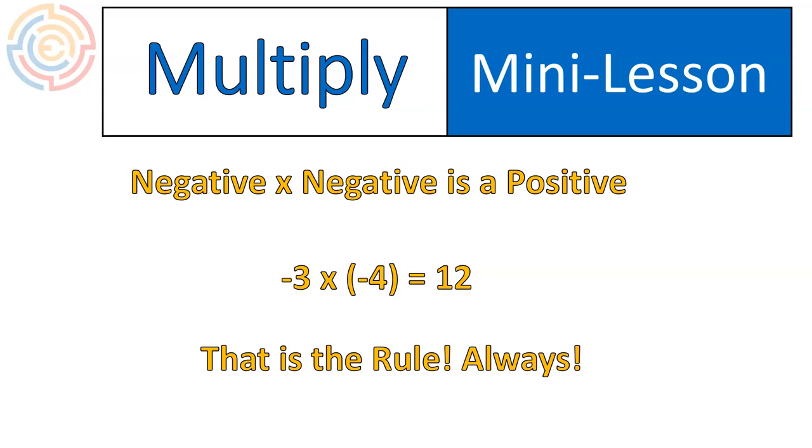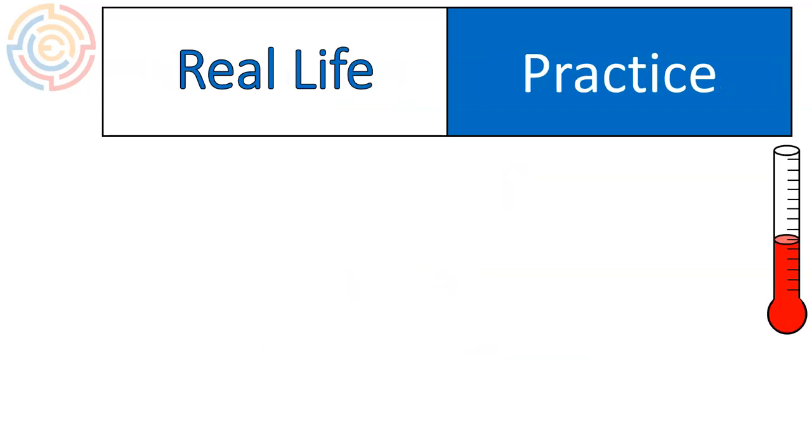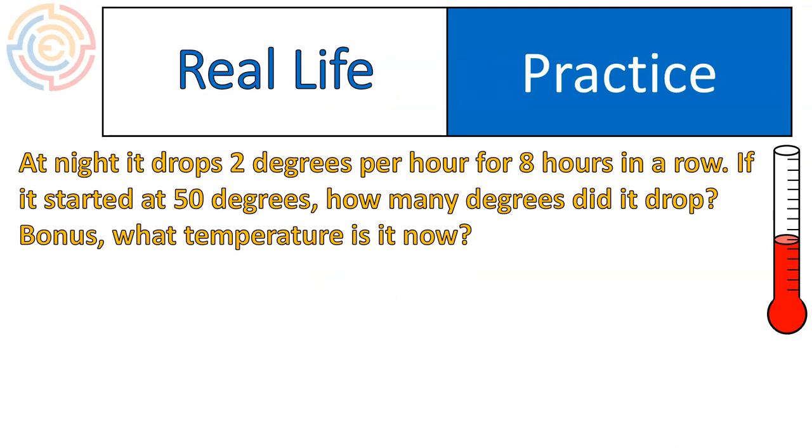Great. Now it's time for some practice using a word problem. I'm going to combine those two things together. We're going to practice using a word problem. I want you to think about this question. Here we go. At night, it drops two degrees per hour for eight hours in a row. If it started at 50 degrees, how many degrees did it drop? And the bonus question, what temperature is it now? So we're going to take a look at that. I want you to pause the video and try this one out on your own. Try thinking about what this means in terms of positive and negative numbers. Write it out and be ready to explain because I'm definitely going to be listening for your explanation. All right, go for it.